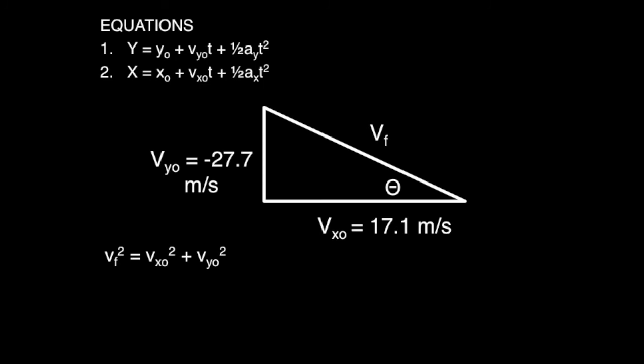To answer our last question in finding the velocity of the ball, we used the Pythagorean theorem. A squared plus B squared equals C squared. The speed of the ball is 32.6 meters per second.